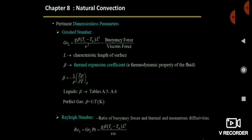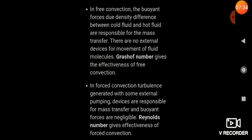One more question has been asked about natural convection and forced convection. They simply ask which dimensionless number represents forced convection and which represents natural convection, giving four options. For natural convection — also called free convection — it is represented by the Grashof number and Rayleigh number. Forced convection is represented by the Reynolds number. That's it — nothing more about this.